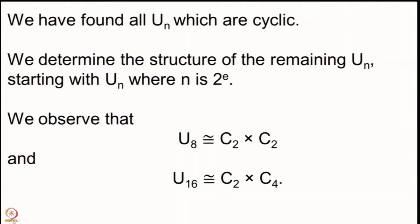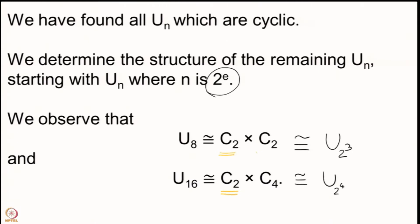Let us recall that quickly. We have found all U(n) which are cyclic and then we are determining the structure of the remaining U(n), starting with U(2^e). We looked at U(2^3) which is U(8) and U(2^4) which is U(16). We observed that there is one copy of the group C₂ always sitting in these and the remaining one has order equal to the order of this group divided by 2.